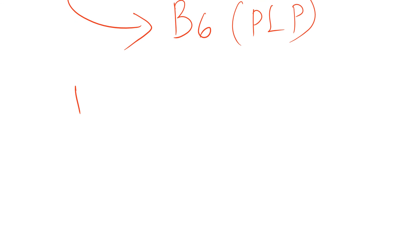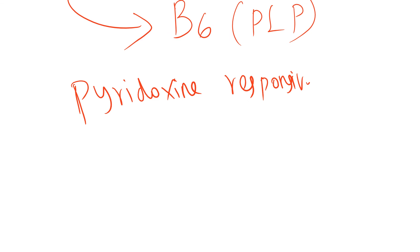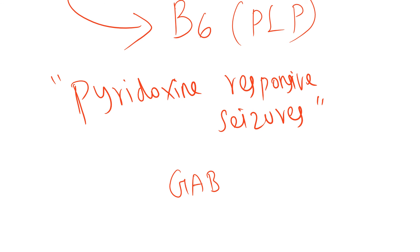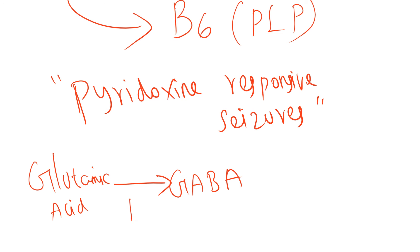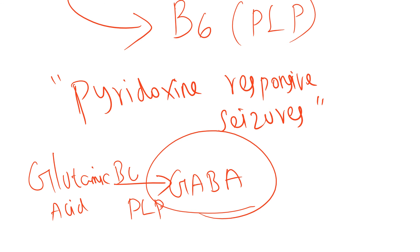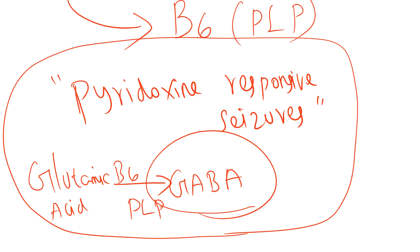This explains pyridoxine-responsive seizures seen in neonates. GABA is an inhibitory neurotransmitter produced from glutamic acid, and PLP (pyridoxal phosphate) is needed for this decarboxylation reaction. If GABA is not produced, the inhibitory neurotransmitter won't be present, and this leads to seizures. This is the biochemical basis behind pyridoxine-responsive seizures seen in neonates.